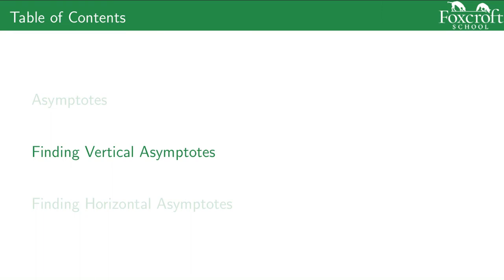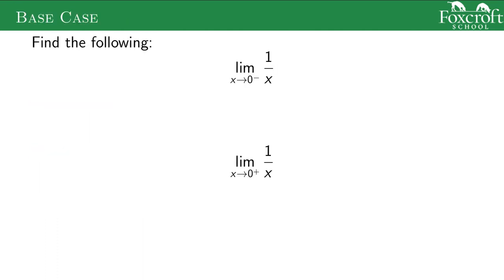Now we know the basic definitions of vertical and horizontal asymptotes. We're going to talk about how to find them algebraically in calculus. We'll look at the two base cases we'll have to worry about. One thing you'll notice for a lot of these asymptote problems is that they involve one-sided limits, because asymptotes often have a jump on the two sides.